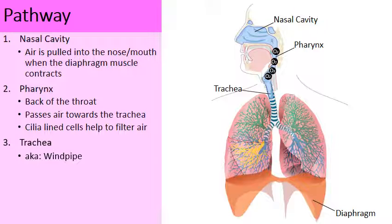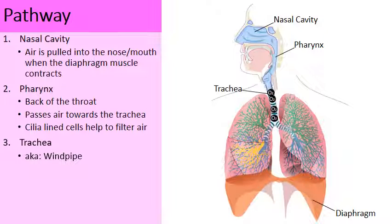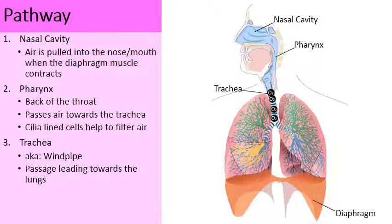Now we're going to make our way down the trachea, also called the windpipe. Here we have the oxygen moving down the trachea — this is the passage that will lead towards both of your lungs.